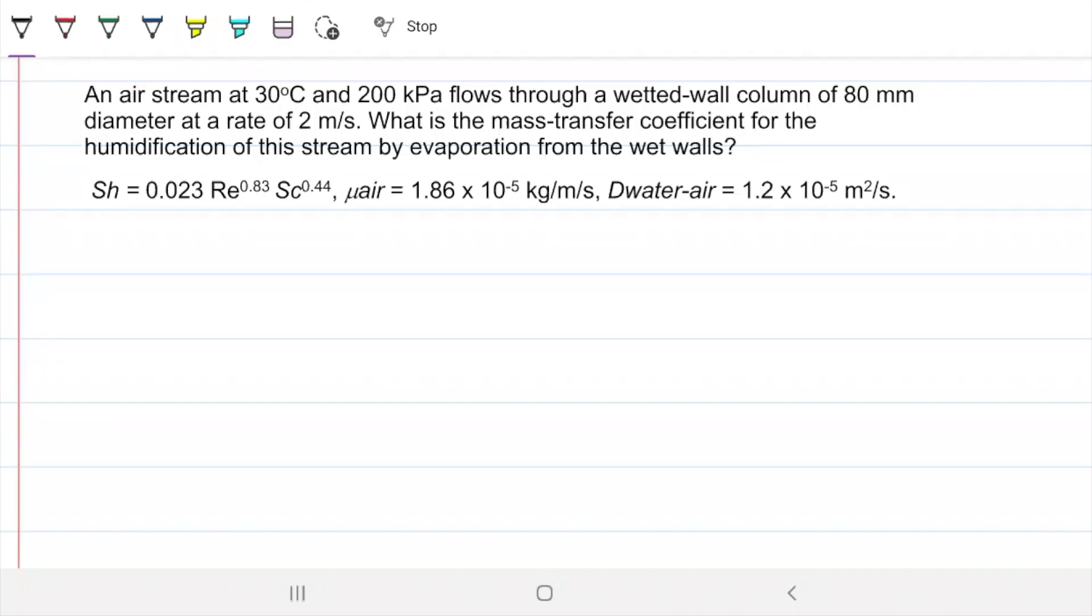An air stream at 30 Celsius and 200 kilopascals flows, let me just go ahead and highlight this because we know that's going to affect our density, flows through a wet wall column of 80 millimeters in diameter at a rate of 2 meters per second. What is the mass transfer coefficient for the humidification of this stream by evaporation from the wet walls?